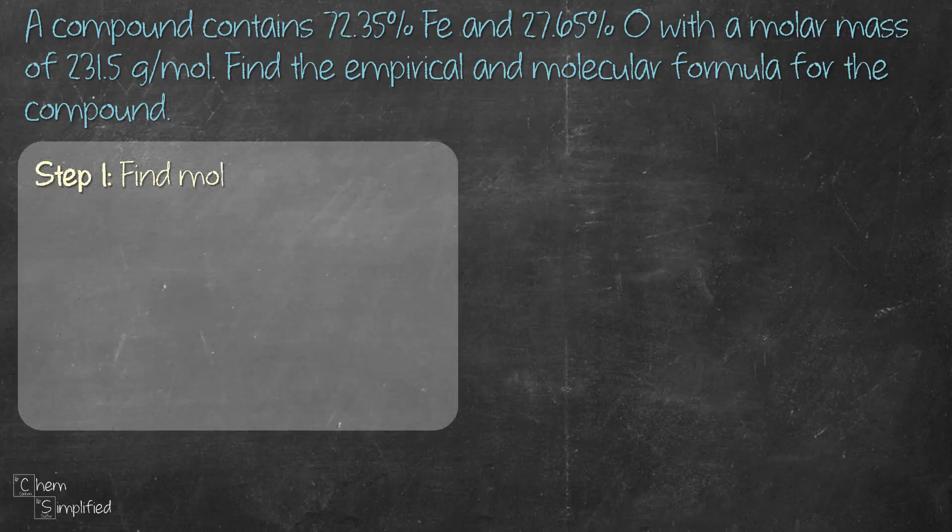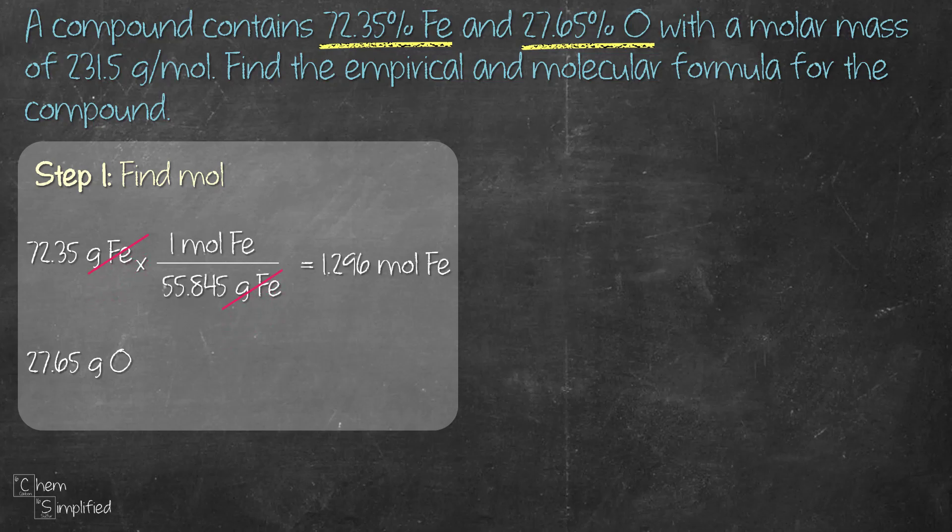Let's start with the first step, finding the mole. We are given 72.35% Fe and 27.65% O. We are going to assume that we have 100 grams of sample. Therefore, the mass of Fe is 72.35 grams and the mass of oxygen is 27.65 grams. We convert the percentage to grams so that it will allow us to calculate the mole of each element. So all we have to do now is to divide the given mass with the atomic mass of the element and then that will give us the mole. So we get 1.296 mole of Fe and we do the same for oxygen, except now we divide with the atomic mass of oxygen which is 15.999 and that gives us 1.728 mole of oxygen.